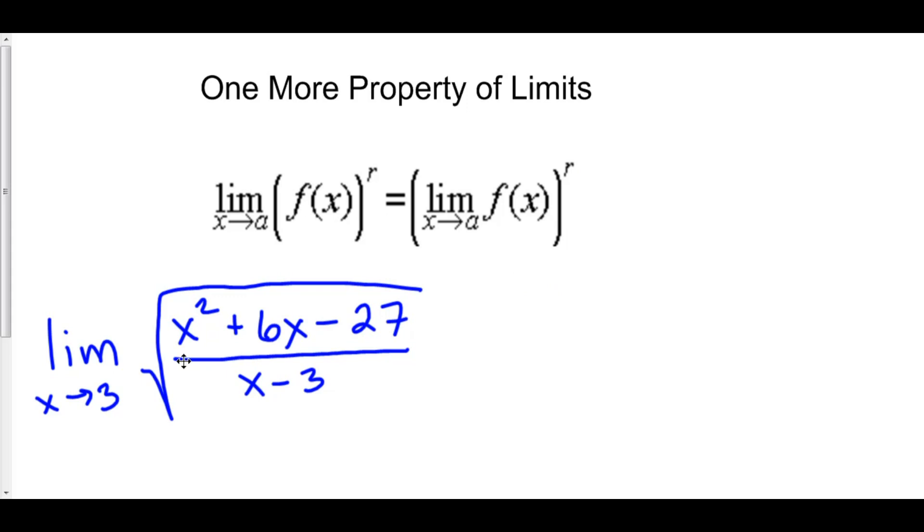For example, here we have the limit as x approaches 3 of the square root of x squared plus 6x minus 27 all over x minus 3.